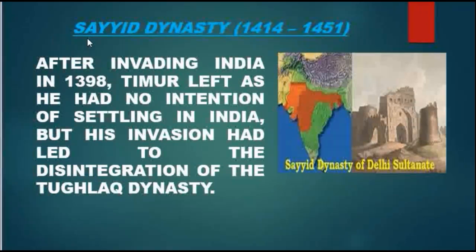Good morning children. Do you know which was the 4th dynasty of the Delhi Sultanate? Yes, the Sayyid dynasty. It ruled from 1414 to 1451. After invading India in 1398, Timur left as he had no intention of settling in India, but his invasion had led to the disintegration of the Tughlaq dynasty and the establishment of the Sayyid dynasty.